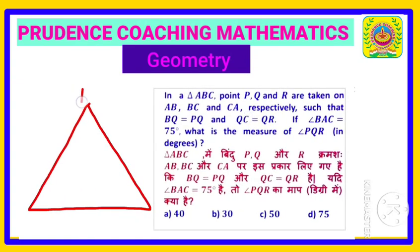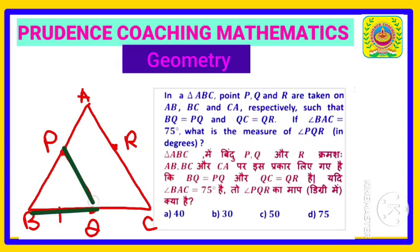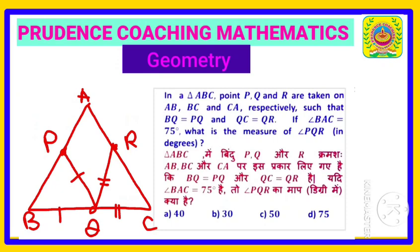In a triangle ABC, points P, Q, R are taken on AB, BC, and CA respectively. So P is on AB, Q is on BC, and R is on AC. It is given that BQ is equal to PQ, and QC is equal to QR. The angle BAC is 75 degrees. We are asked to find the value of angle PQR.